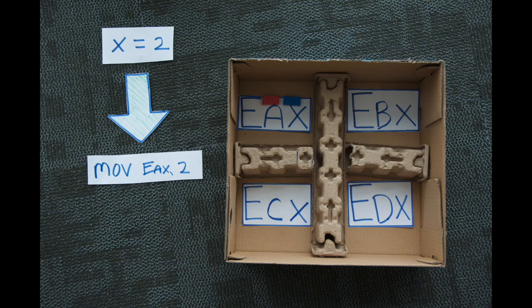Whoa, okay, so what happened there? Well all we did is use the instruction, move EAX, 2. And that just means move the value of 2, in this case Lego bricks, to the register EAX. And now we can see that EAX has two Lego bricks in it.